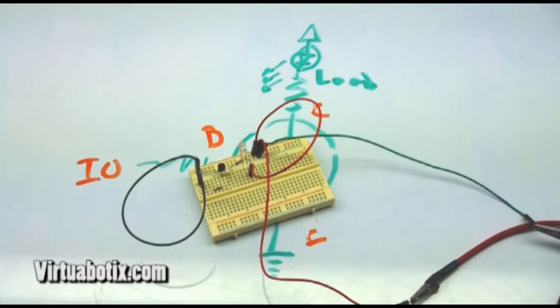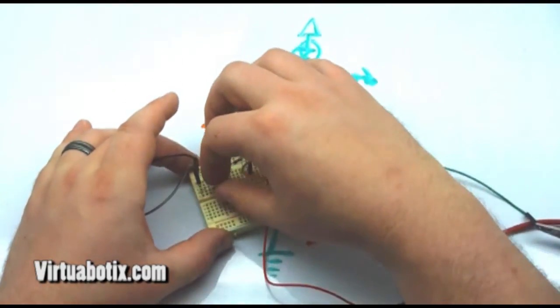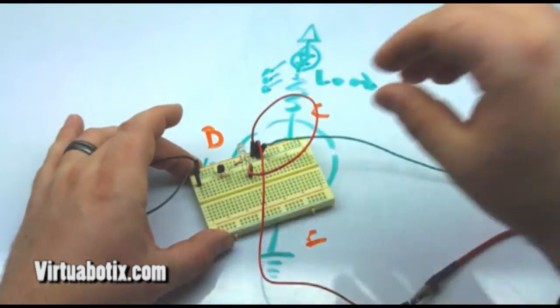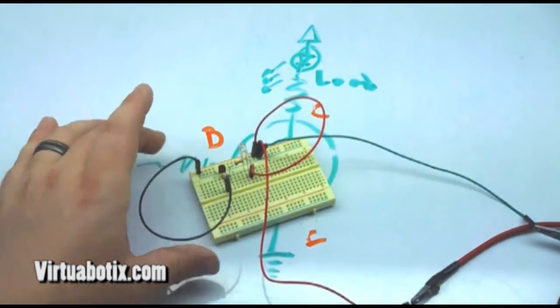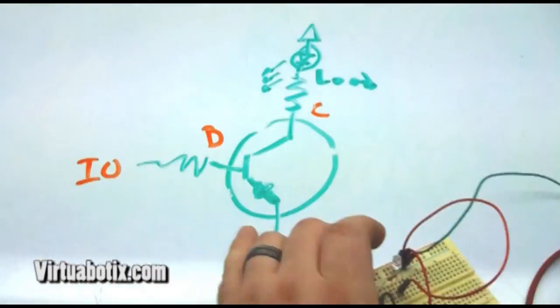However, what we can do, turn this off again, if we were to remove this base resistor and just directly short to the base, that is where things get bad.